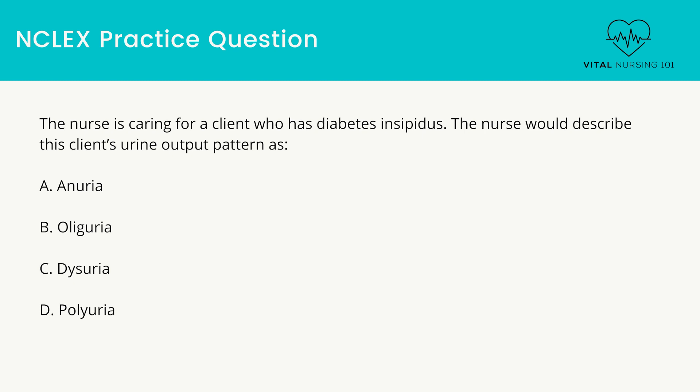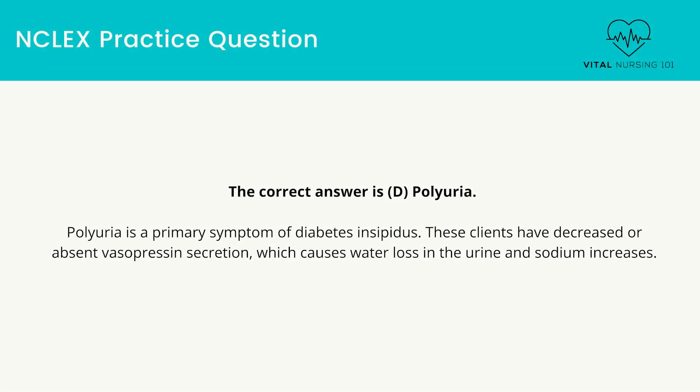The nurse is caring for a client who has diabetes insipidus. The nurse would describe this client's urine output pattern as: anuria, oliguria, dysuria, or polyuria. The correct answer is polyuria. Polyuria is a primary symptom of diabetes insipidus. These clients have decreased or absent vasopressin secretion, which causes water loss in the urine and sodium increases.